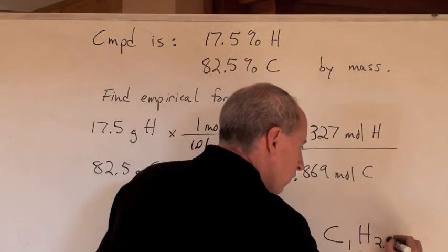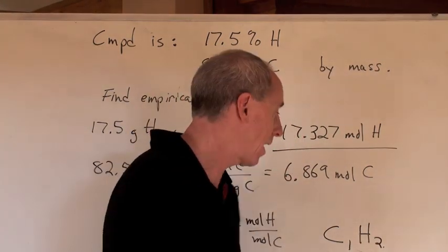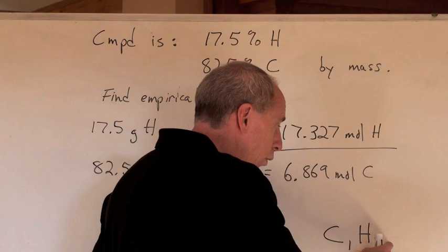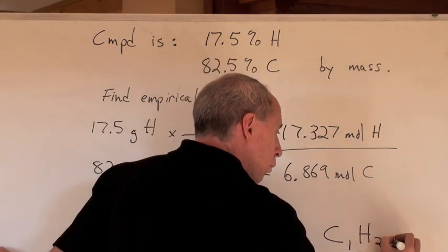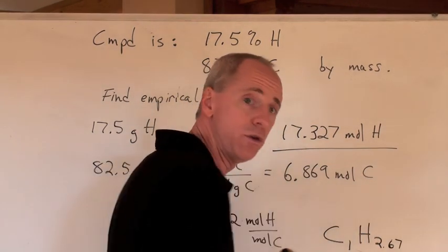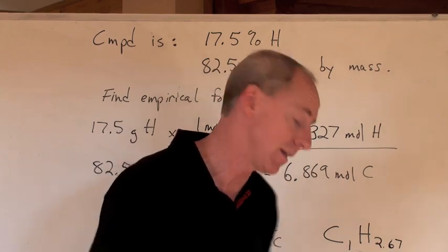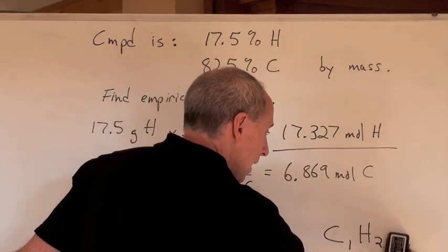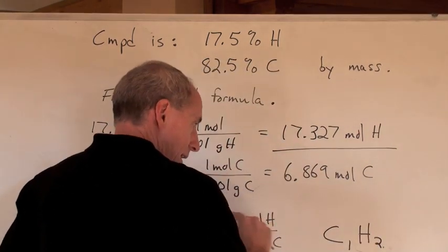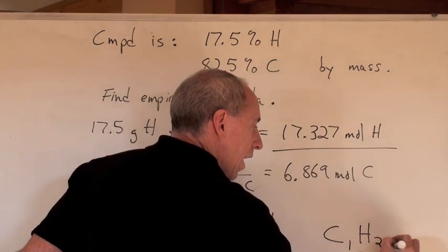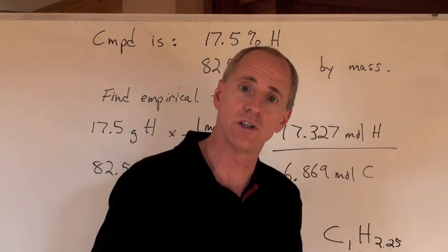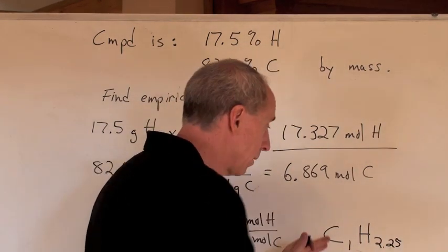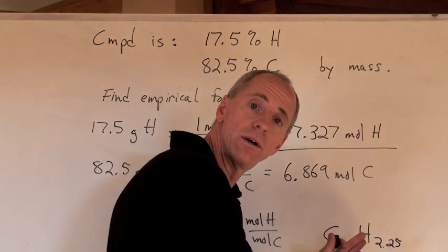If it was a 2.5, you would then say, I've got to double it. If it was a 2.33 or a 2.67, which is 2 thirds, multiply by 3. If you get an answer here, and it gives you 2.25, don't round that down to 2. That's a quarter, so you've got to multiply the whole formula by 4.